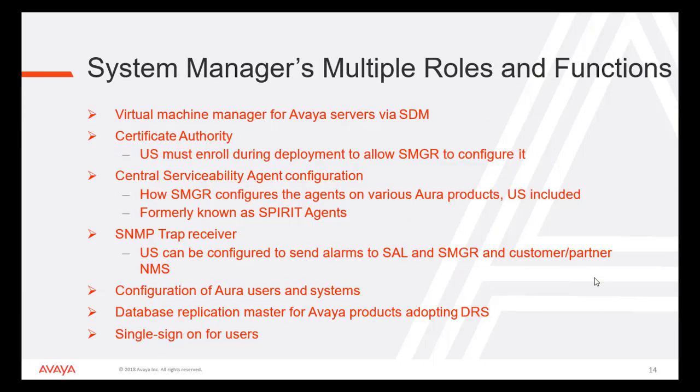System Manager's multiple roles and functions: System Manager acts as a virtual machine manager for Avaya servers via SDM. It is a certificate authority — Utility Server must enroll during deployment to allow System Manager to configure it. It has central Serviceability Agent configuration, formerly known as Spirit agents, for configuring agents on various Aura products including Utility Server. It has an SNMP trap receiver — Utility Server can be configured to send alarms to SAL, System Manager, and customer/partner NMS. Configuration of Aura users and systems, database replication master for Avaya products adopting DRS, and single sign-on for users.